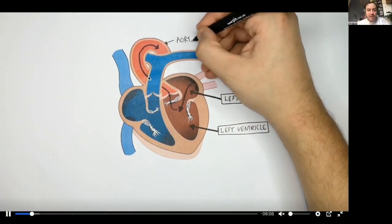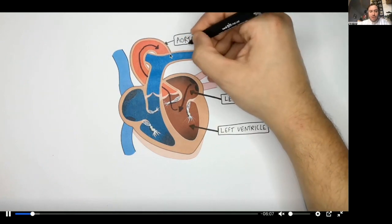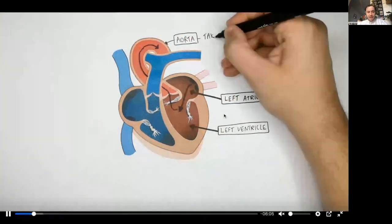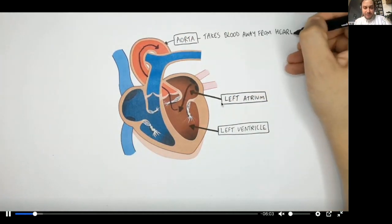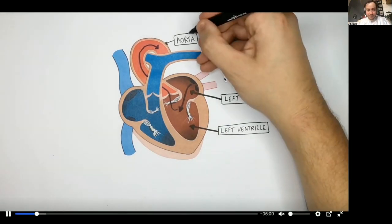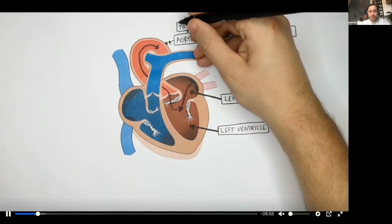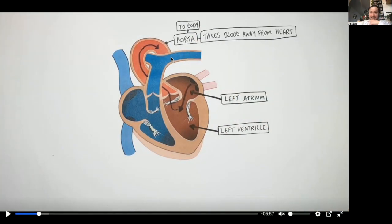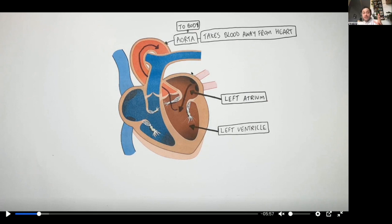This is the aorta. The aorta transports blood away from the heart, around the body. It's the biggest blood vessel in the body. Remember: left atrium, left ventricle, aorta — and then it goes around the body.